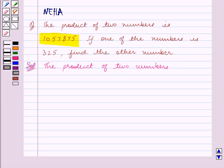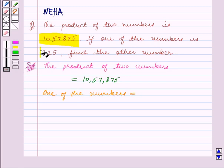which under Indian system of numeration is equal to 10,57,875. Now one of the numbers is equal to 325.